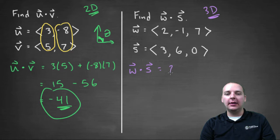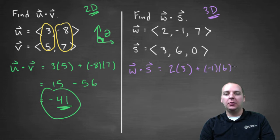We're going to take the i-th components and multiply them, 2 times 3. We'll take -1 times positive 6, and we'll take 7 times 0. And we'll take those products and add the results together. We have 6 minus 6 plus 7 times 0 is 0. So that gives us zero.